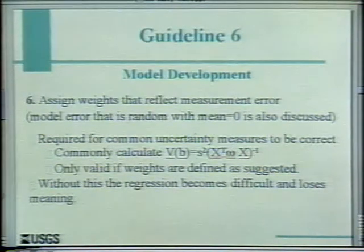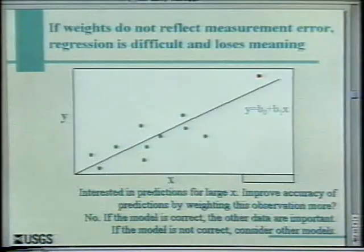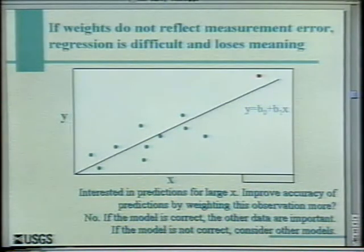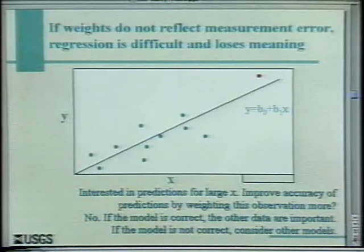If you change the weights by orders of magnitude, you can get anything you want, and the regression really loses a lot of meaning. Consider a linear regression where x is our independent variable, y is our dependent variable. Most of our observations are from small values of x, and we have one for a large value of x where our prediction lies. This is analogous in groundwater flow to the situation where we have a lot of hydraulic heads — say, 501 heads — and just a few flows, like 16 flows, and we're trying to say something about transport.